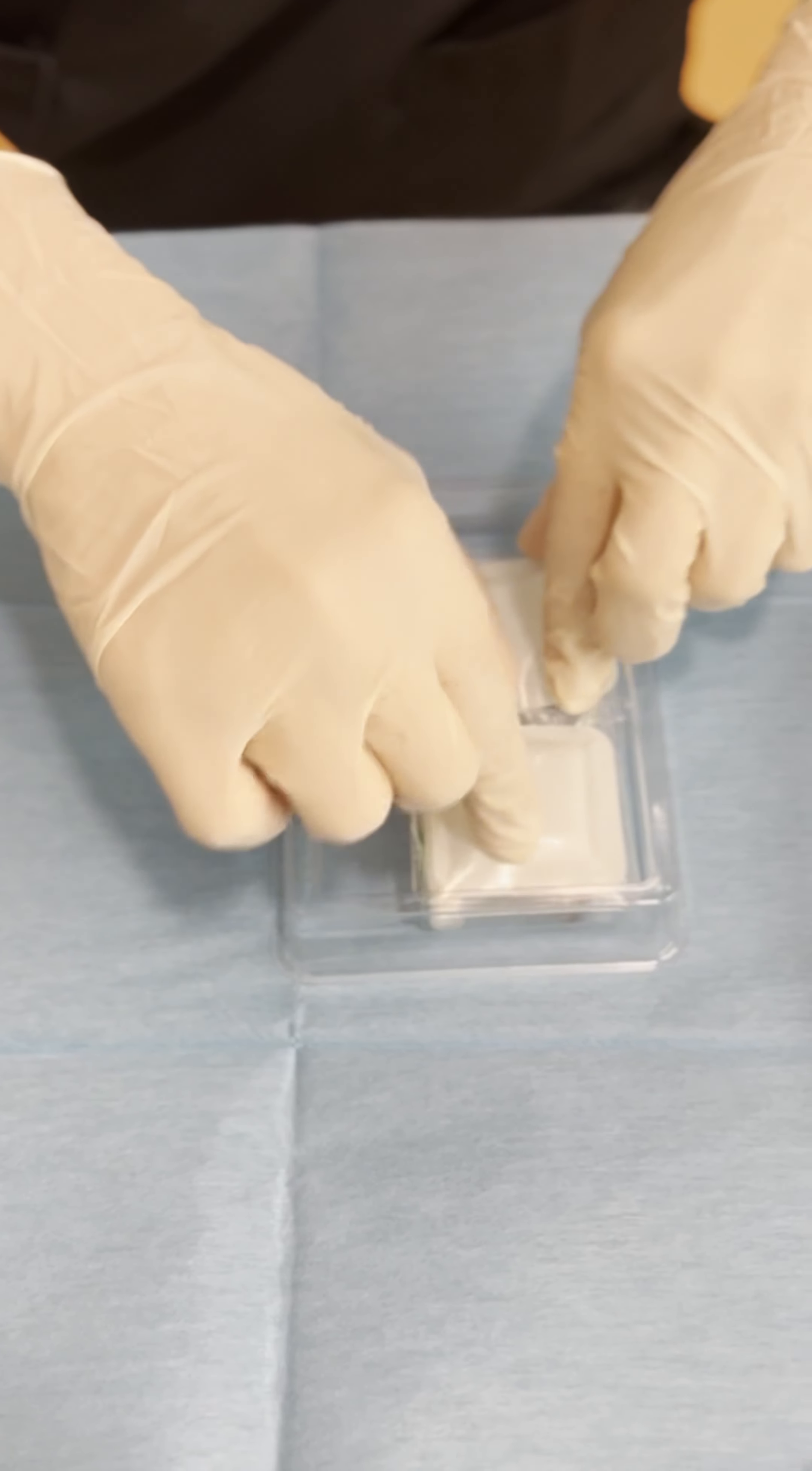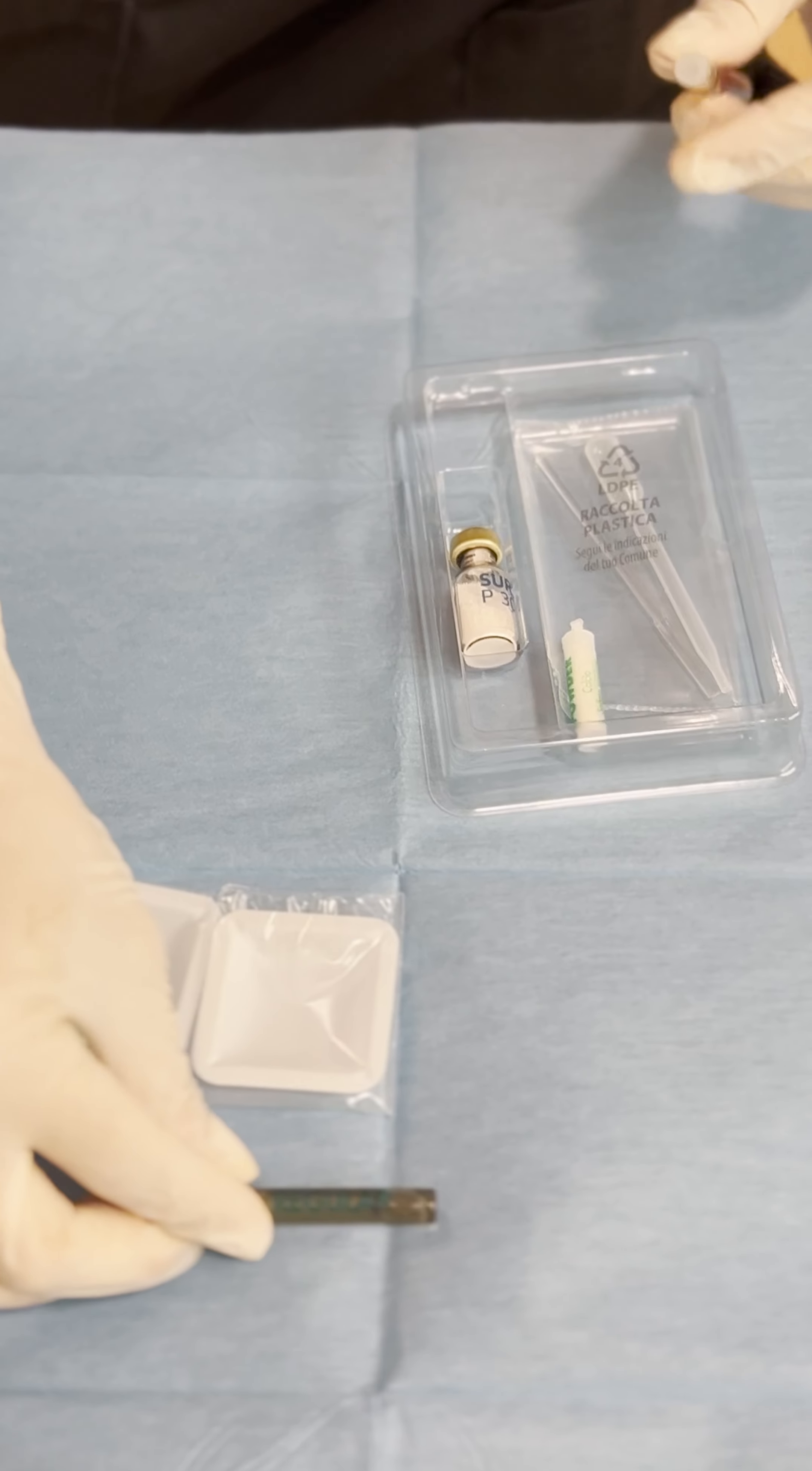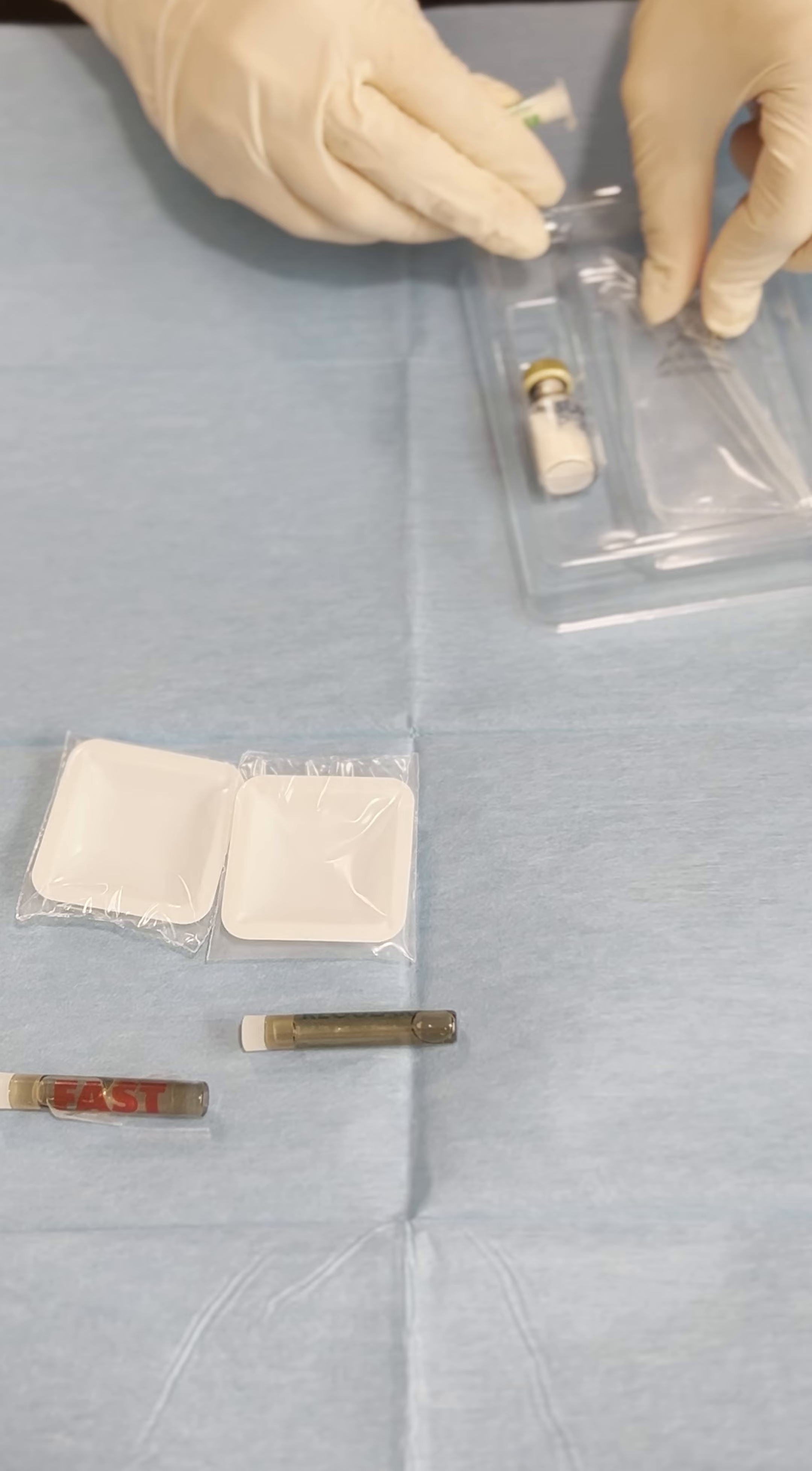In the inside we find two dappins so we can mix it and these are sterile. We are going to find a regular vial which is basically a physiological solution and the fast liquid which is potassium ions that helps speed up the hardening process of the biomaterial.